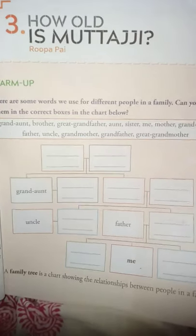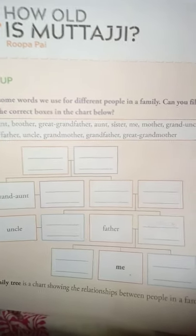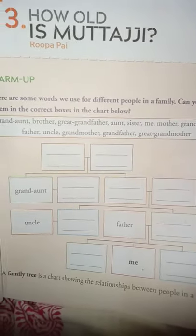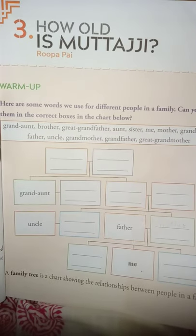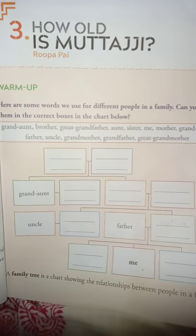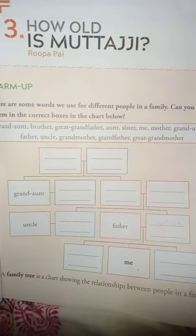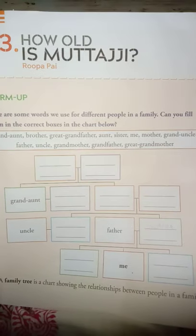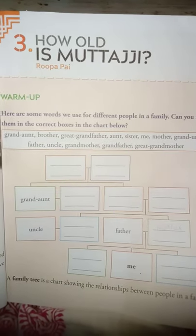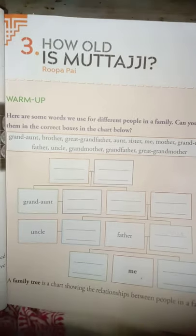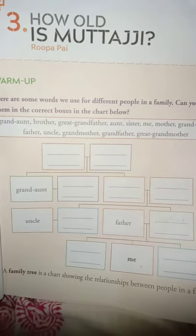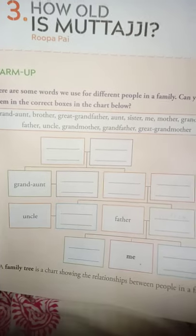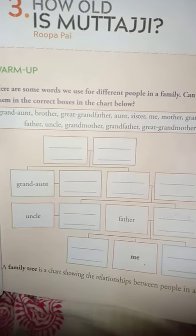Before starting the chapter, there is something given — some pictures, some blocks are given here. It is a warm-up for you all, where there are some words which we use for different people in our family. We use different words. Why father is called only as father — papa, daddy — and mama, mom, ma, amma. There are many words for them.